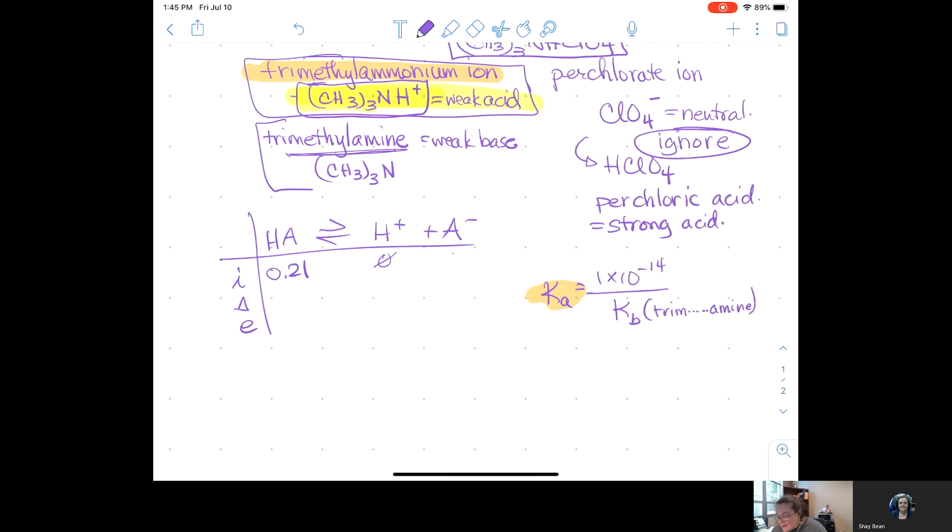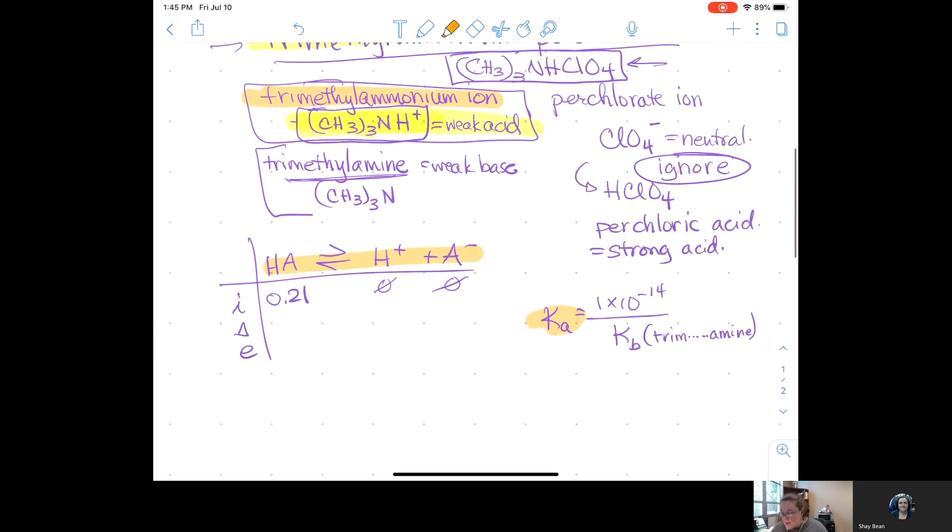So, this is going to be 1 times 10 to the minus 14 divided by the Kb for trimethylamine. This is in the table. The trimethylamine, this guy, that is the weak base that is the conjugate of trimethylammonium ion. He's in the table. He's got a Kb value. All right. So, I've got a way to get the Ka value. The Ka value goes hand in hand with the fact that I have an ice table that shows an acid reaction. All right. Minus X plus X.